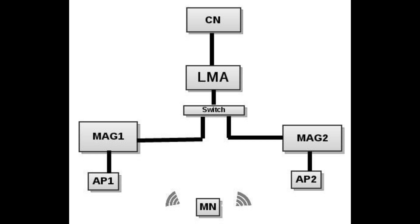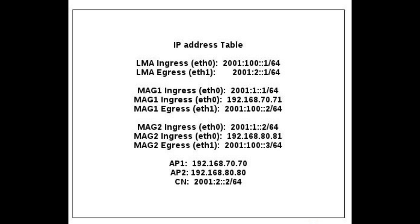This is the first testbed setup of PMIPv6. In this, LMA and MAGs are running on individual Linux machines as we can see in this picture. LMA and MAGs are interconnected using a four-port switch. A MN has two wireless interfaces connected simultaneously with different access points. Each MAG has an Ethernet connection with one access point. MAG and AP have IPv4 connectivity and everything else has IPv6 connection.